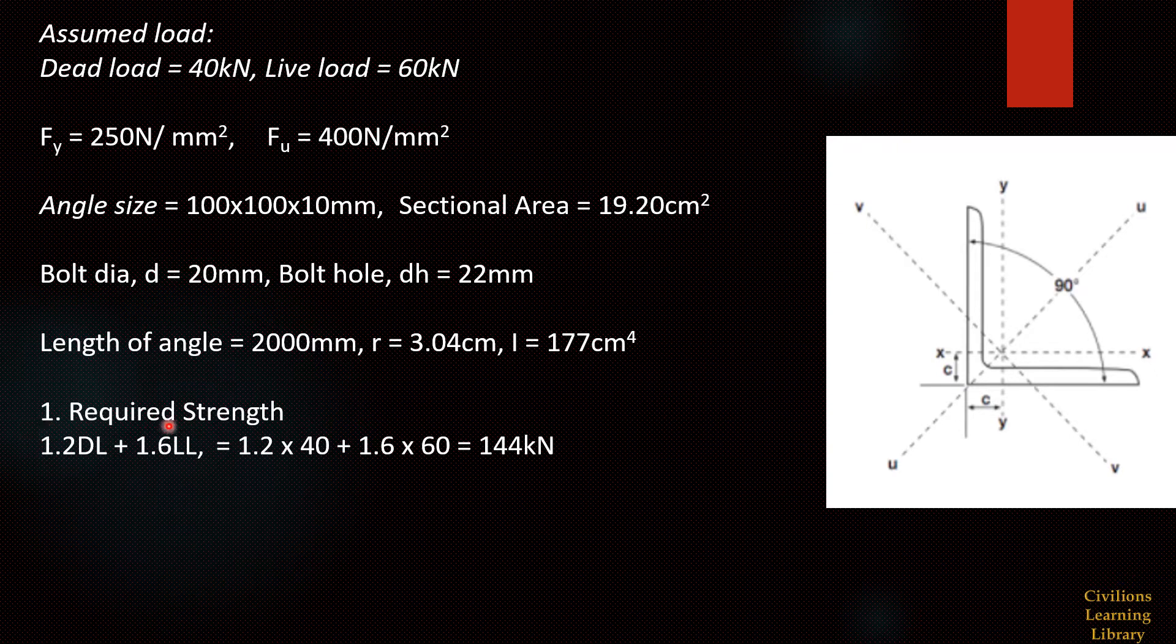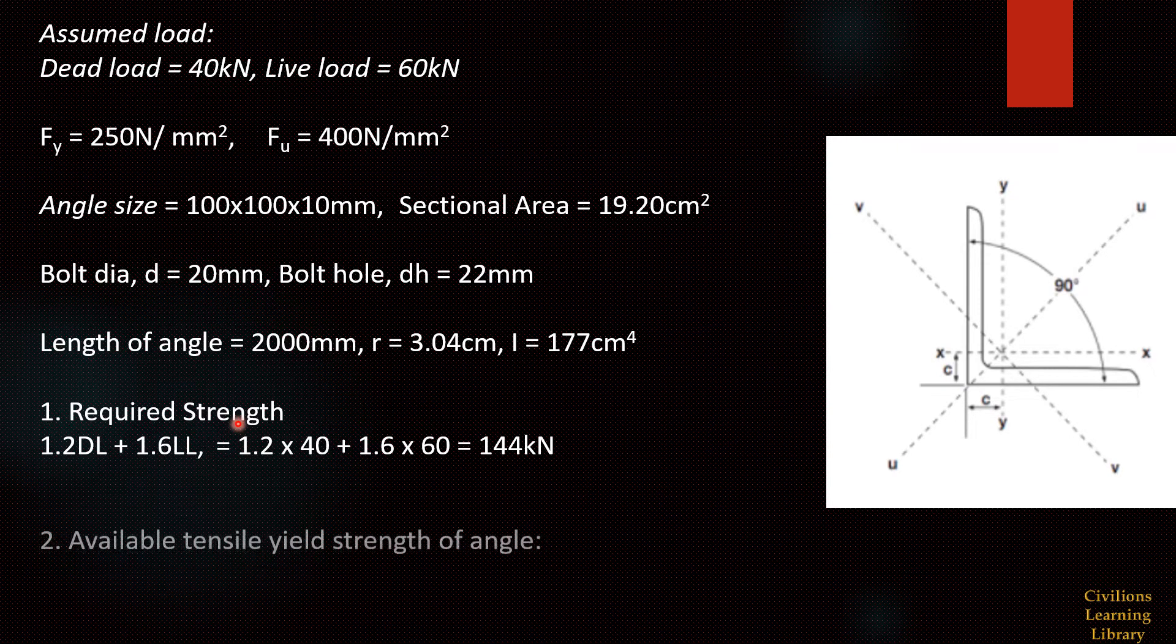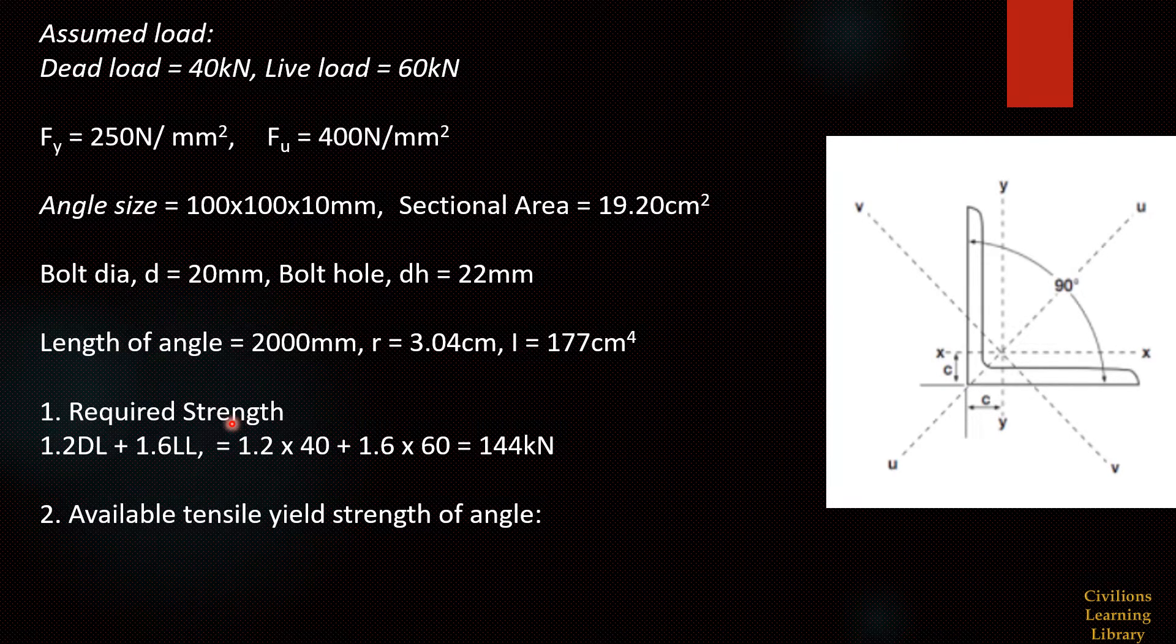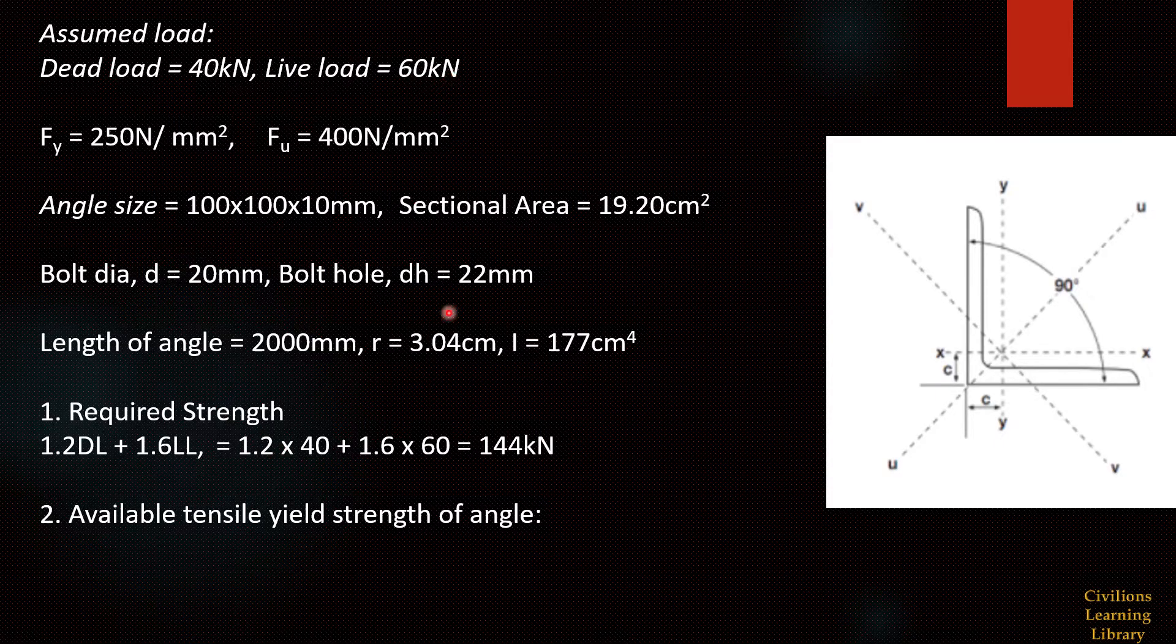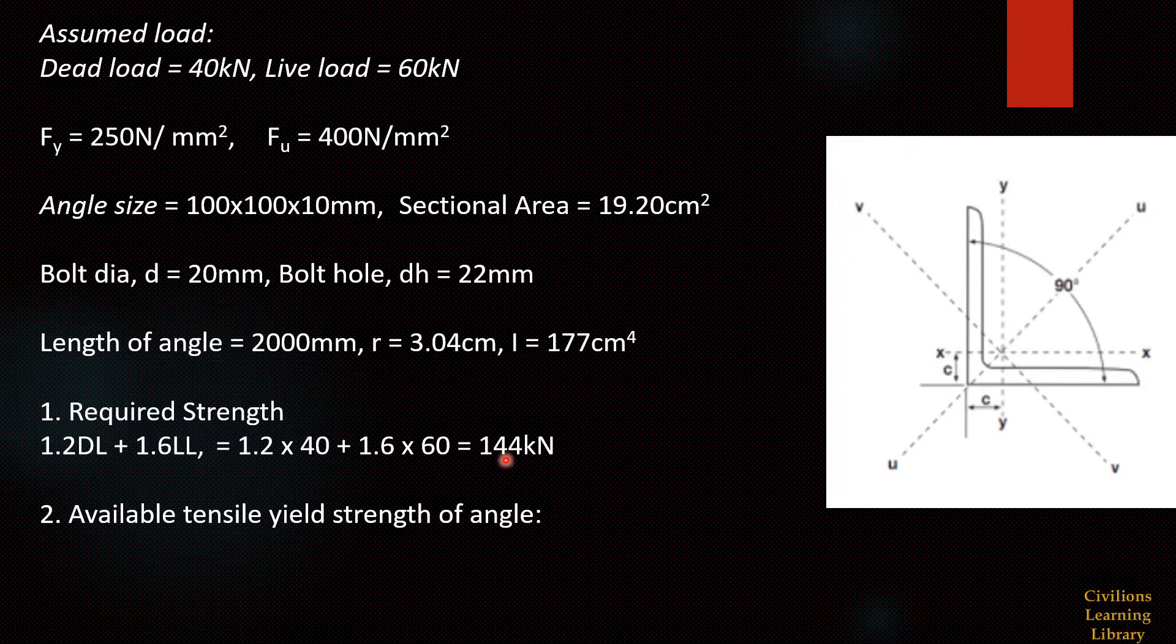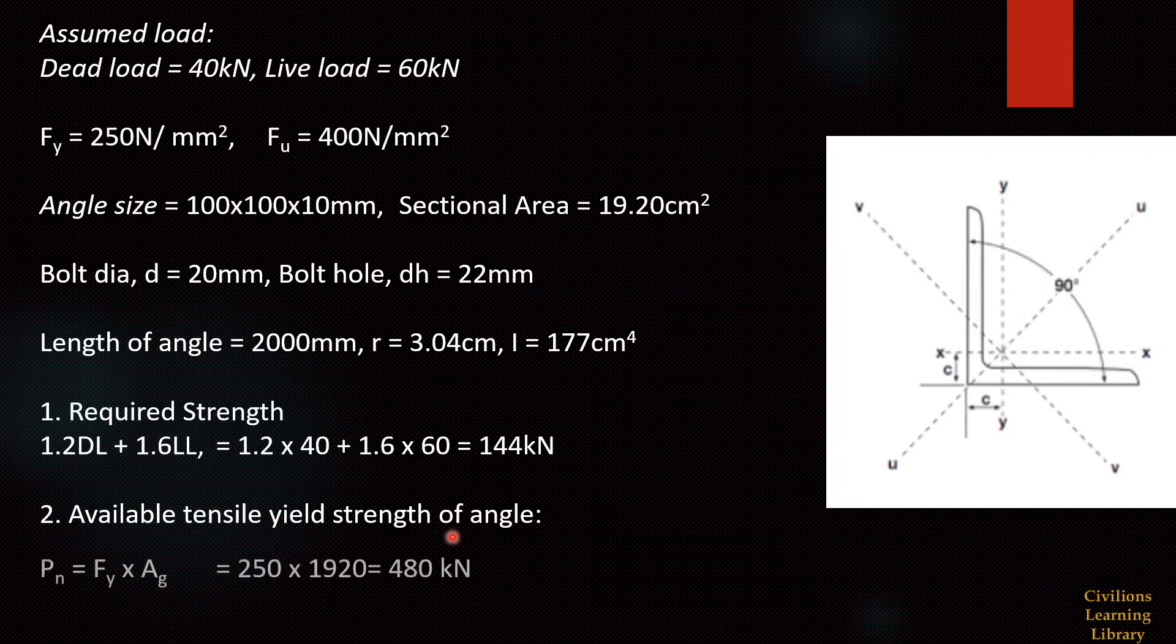First we will find out the required strength of this angle. For LRFD method we have to factor the load. The formula is 1.2DL plus 1.6LL, which is 1.2 into 40 plus 1.6 into 60.